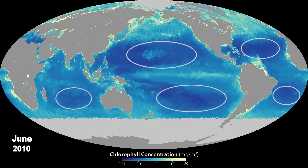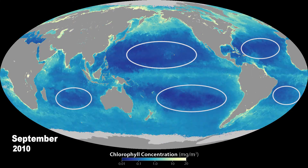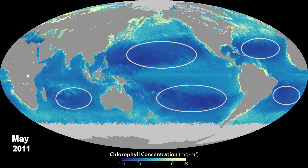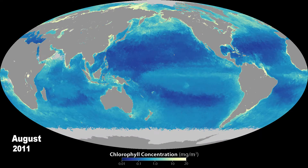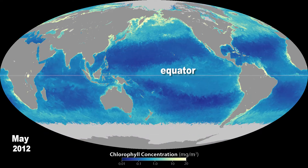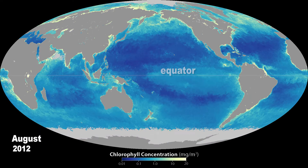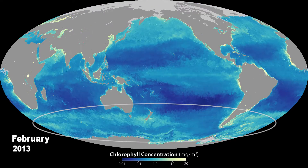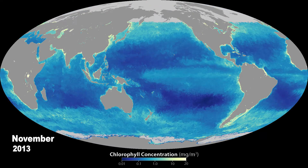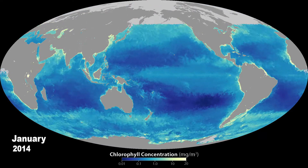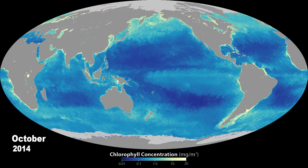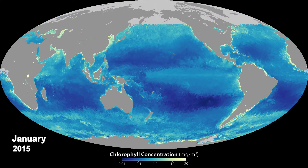Notice the vast regions in the middle latitudes with low chlorophyll — here nutrients are scarce. There is more chlorophyll along the equator and in the spring and summer towards the poles. These are regions where nutrient-rich water upwells towards the surface. Currents, waves and eddies also lift nutrients towards the surface.